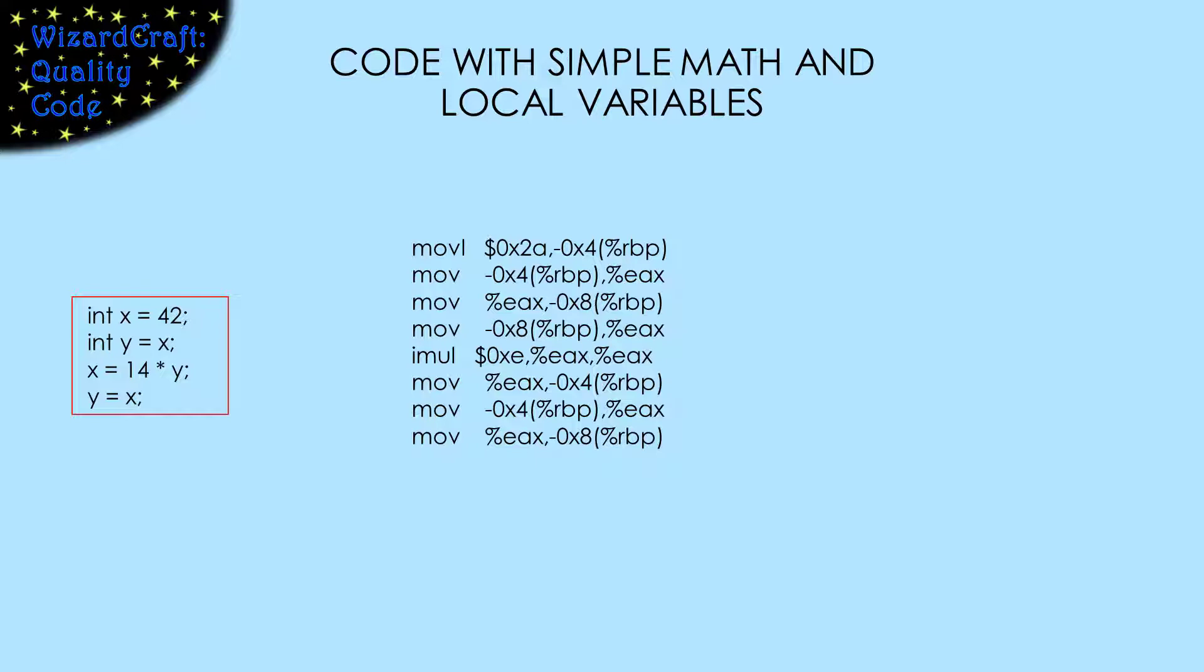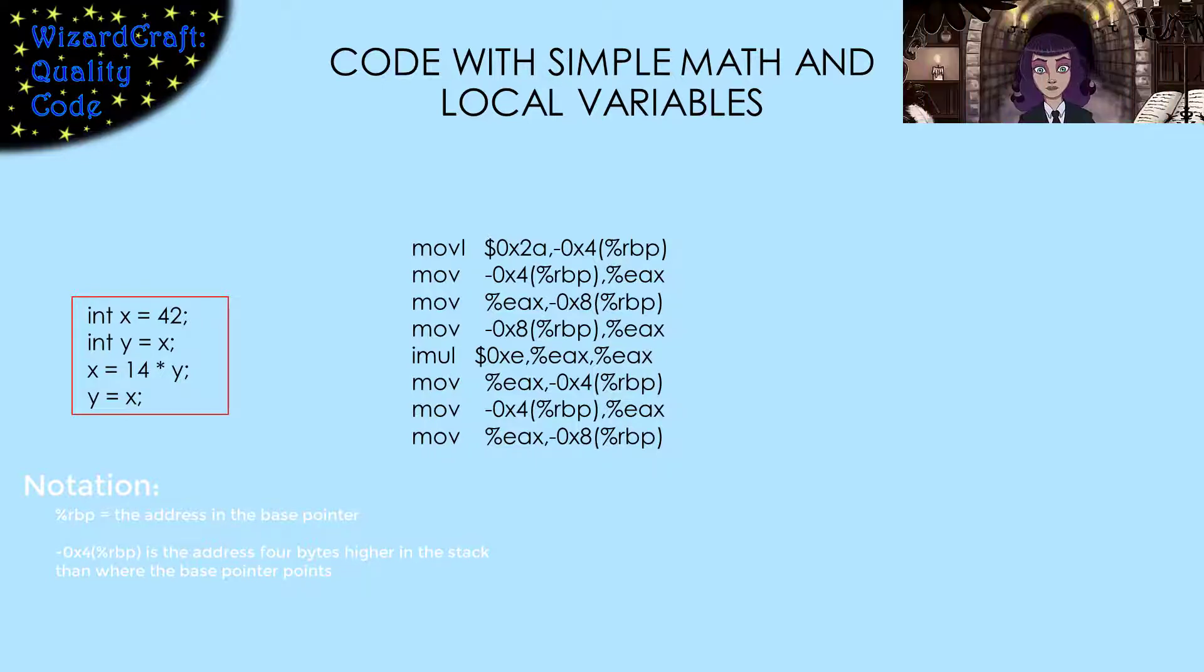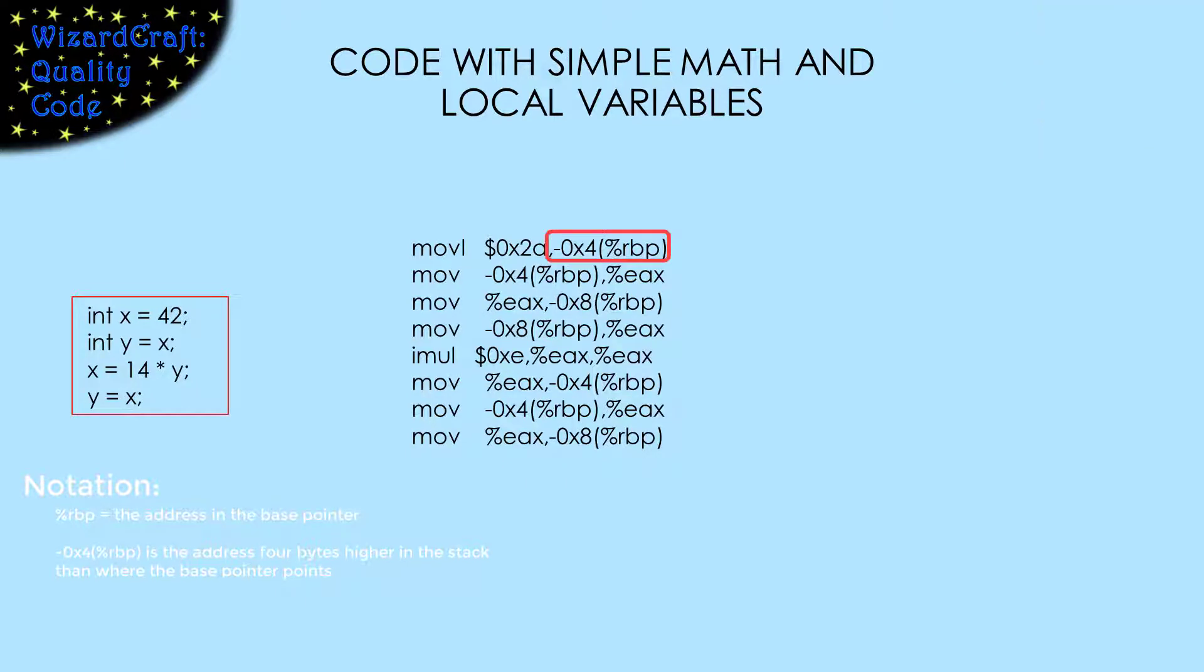In this code, the variables are stored on the stack. That means that the addresses where X and Y are stored will be relative to the base pointer. The base pointer is the register that points at the bottom of the current stack frame. So, X is 4 bytes above the base pointer and Y is 8 bytes above the base pointer. Each int takes 4 bytes. That's why X and Y are 4 bytes apart. The move instruction and its variants are used to move information from the CPU to memory or vice versa.